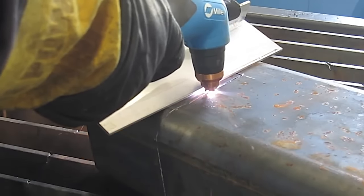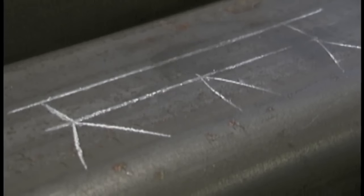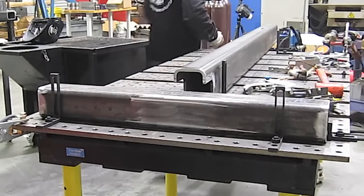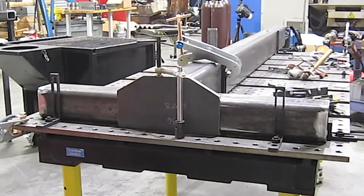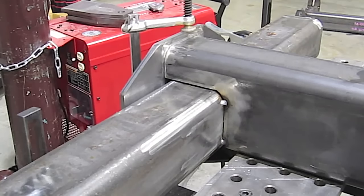For general fabrication, sometimes short circuit MIG is fine, but anything that might be used for a lifting device or something like that, it's best to use some other process other than short circuit MIG. I use pulse spray MIG for this job right here just for that reason.